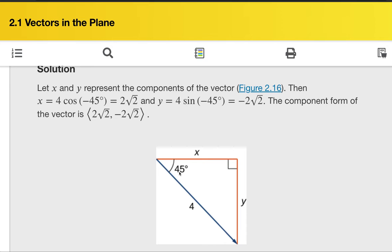So 4 times cosine of negative 45, which is 2 times square root of 2. And y, it is 4 times sine of negative 45.